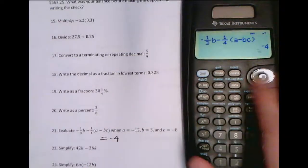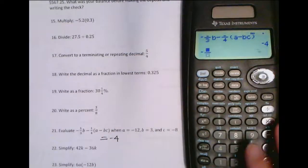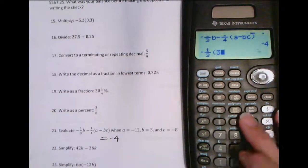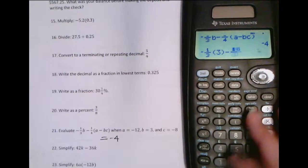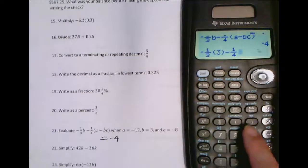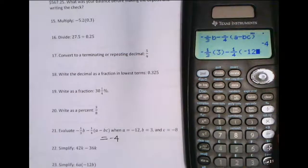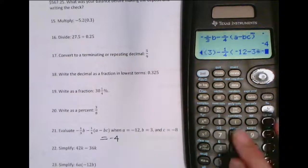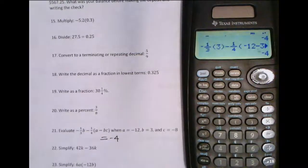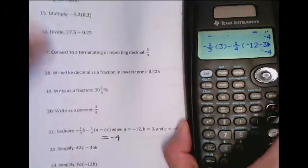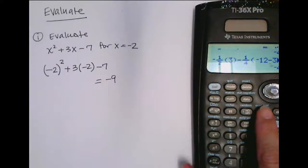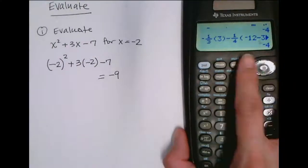Now, again, I can verify this by just typing it in exactly as it appears. b was 3, and using parentheses, minus 1 fourth. a was a negative 12, minus b times a negative 8, and I get negative 4 either way. So there's just two ways that you can evaluate expressions. One is by using the expression evaluator here. Two is by just typing it and using parentheses.